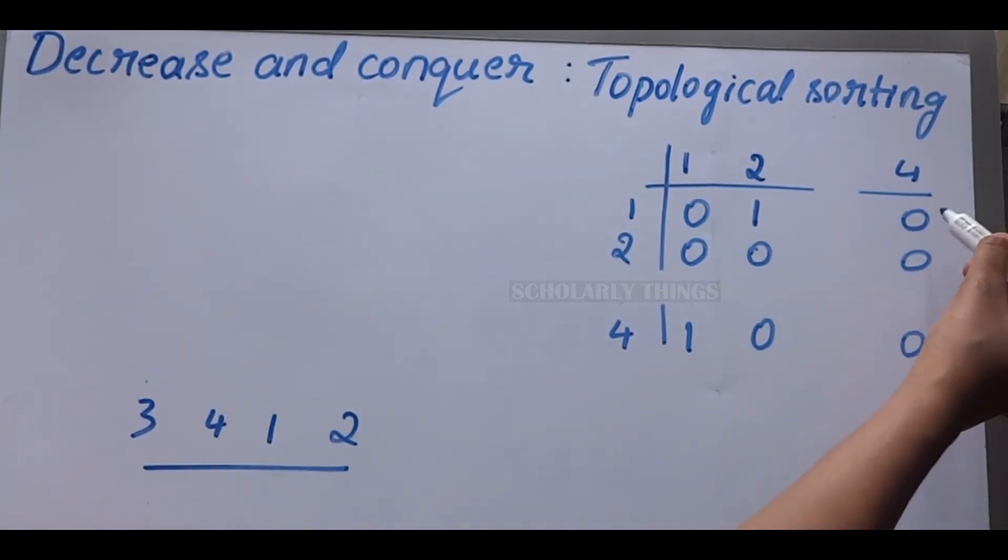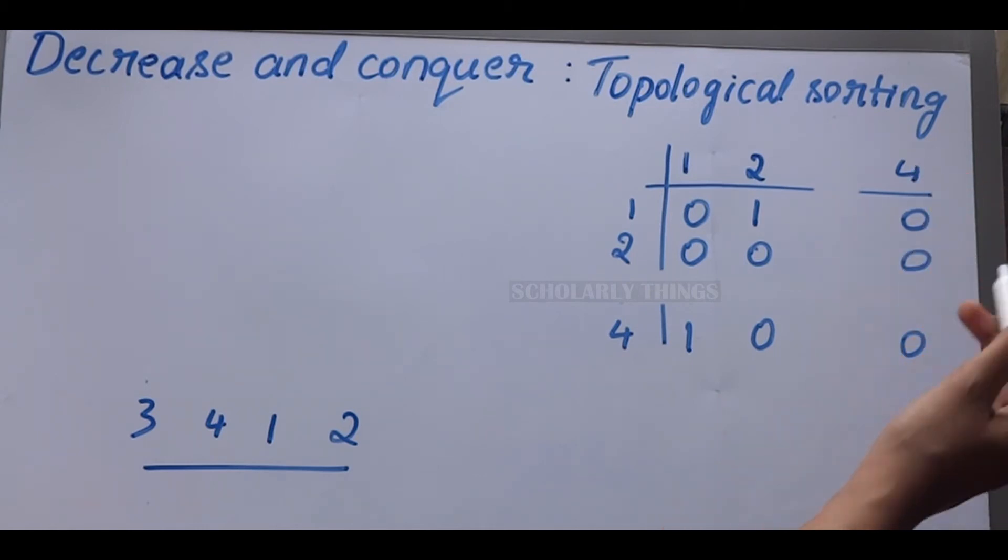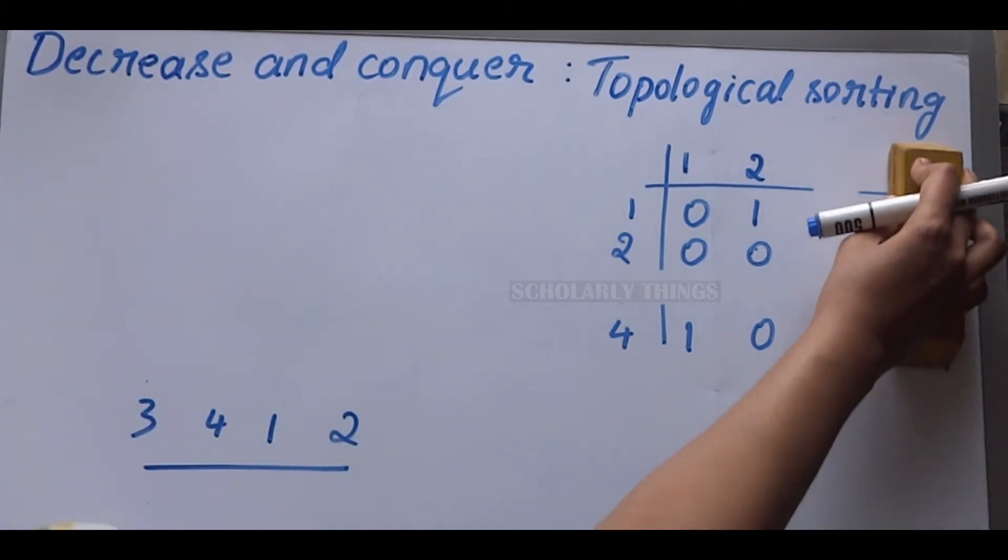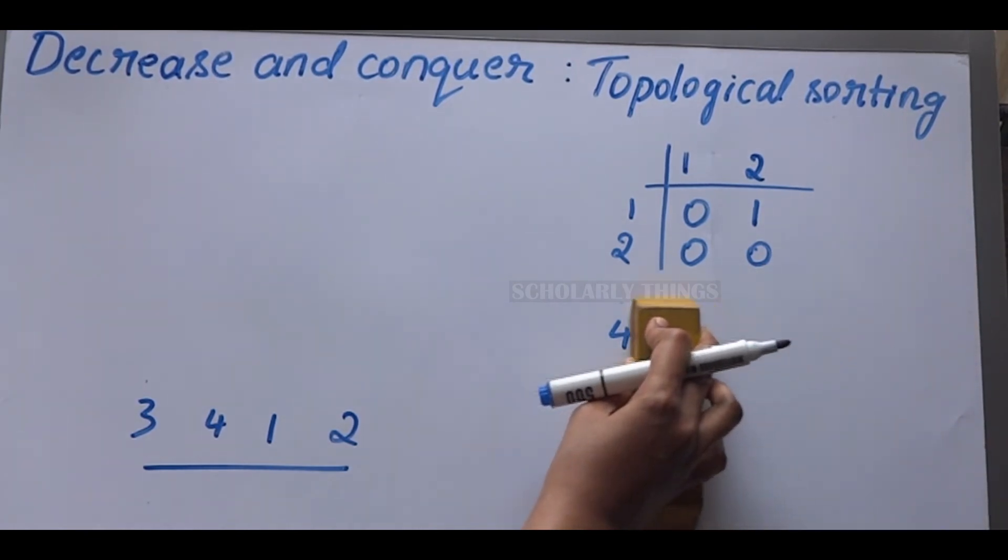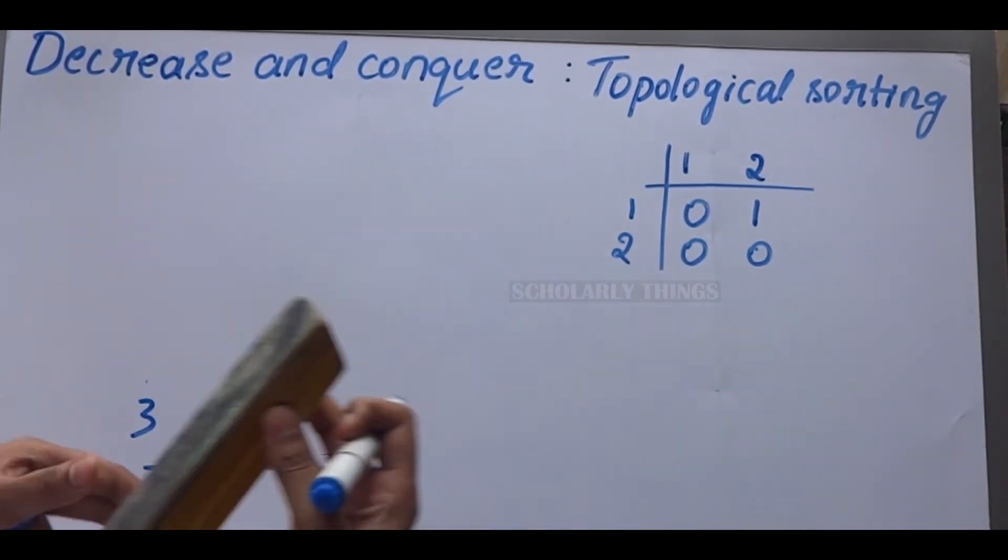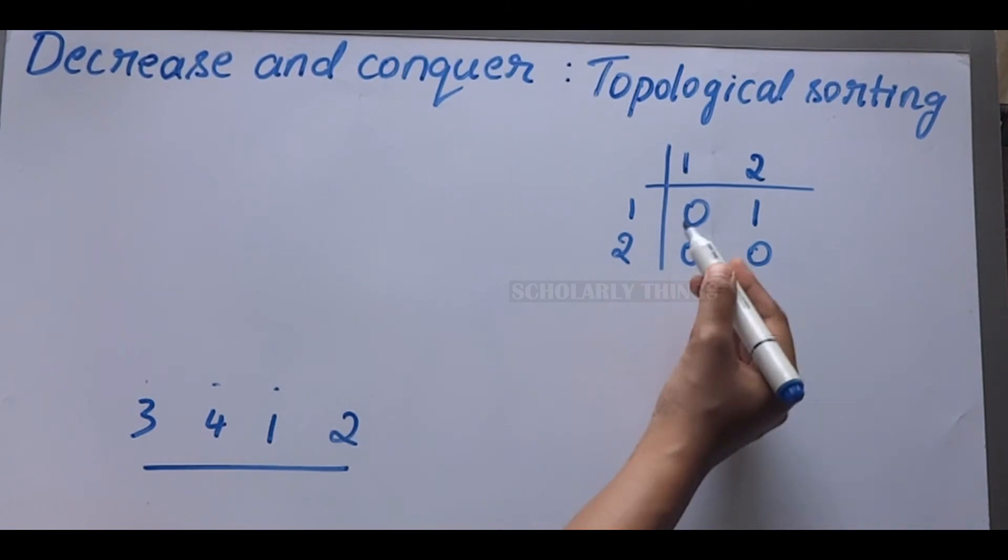Next we see the sum of elements in column 4 is 0. So remove that column and corresponding row. Next we see 1.